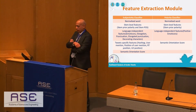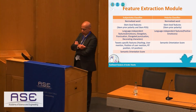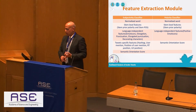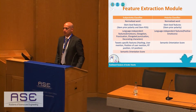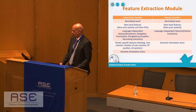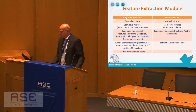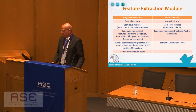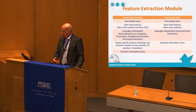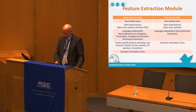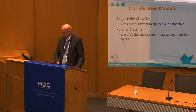For the feature extractor module of the subjectivity classifier, we use normalized word and stem-level features, and language-independent features like emoticons with special handling for context-sensitive directionality, elongation, punctuation, and things specific to Arabic such as decorating characters. Also, tweet-specific features like hashtags, user mention, and position of the user mention. For polarity, we use normalized word and stem-level features, language-independent features like positive emoticons, and the semantic orientation score.